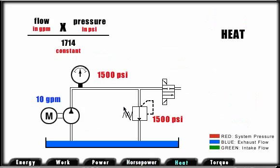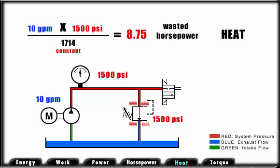The law of conservation of energy states that energy can neither be created nor destroyed, although it can change its form. Energy in a hydraulic system that is not used for work takes the form of heat. For example, if we have 10 gallons per minute going through a relief valve which has a pressure setting of 1,500 psi, we can calculate the energy being converted to heat.